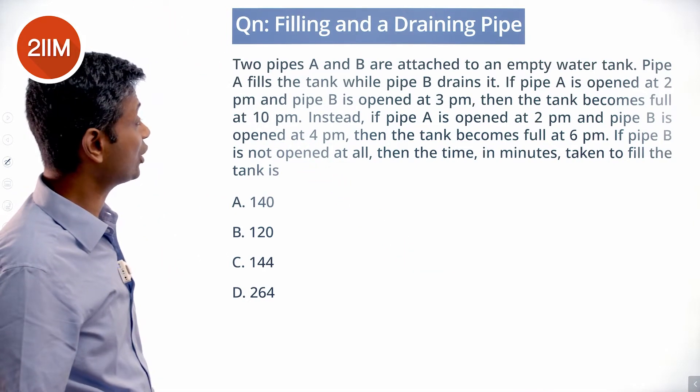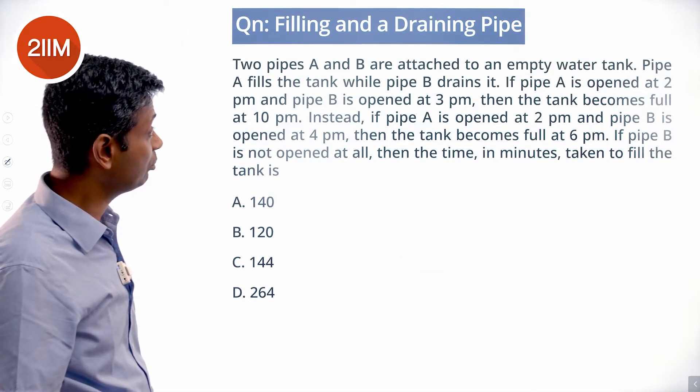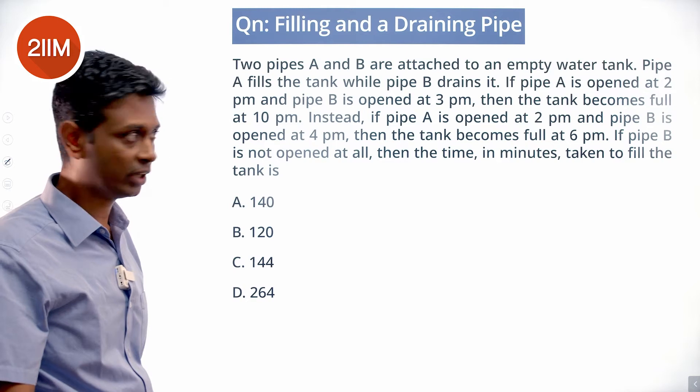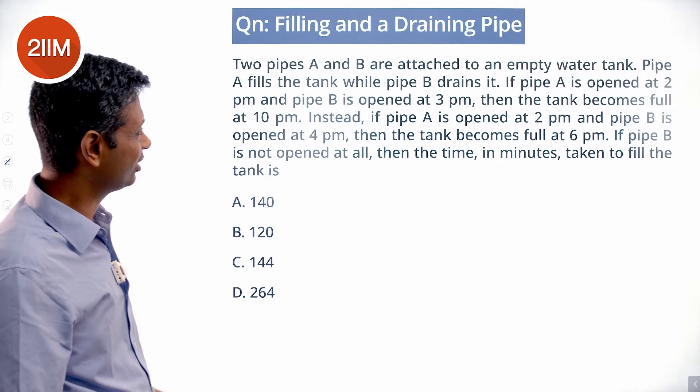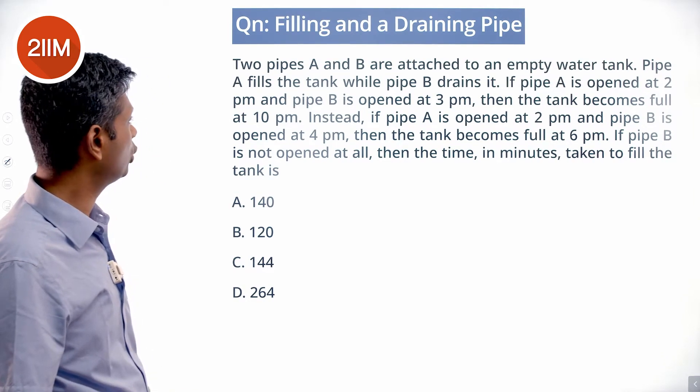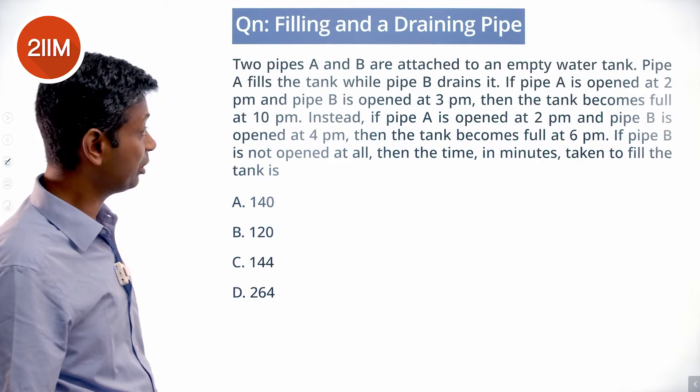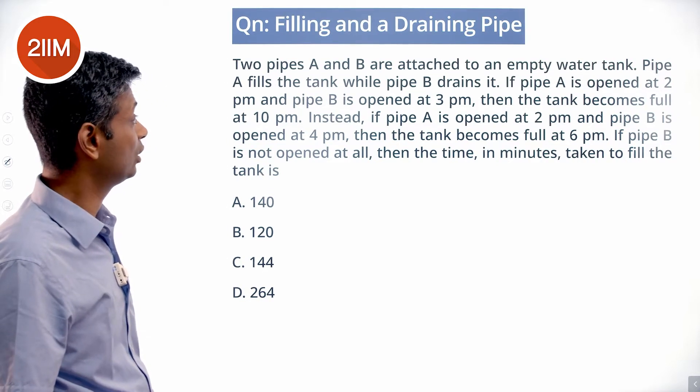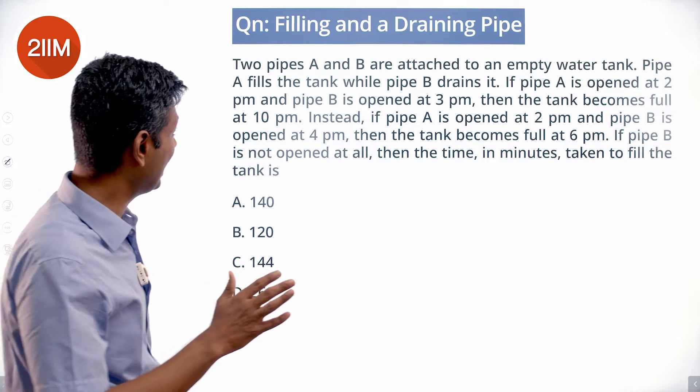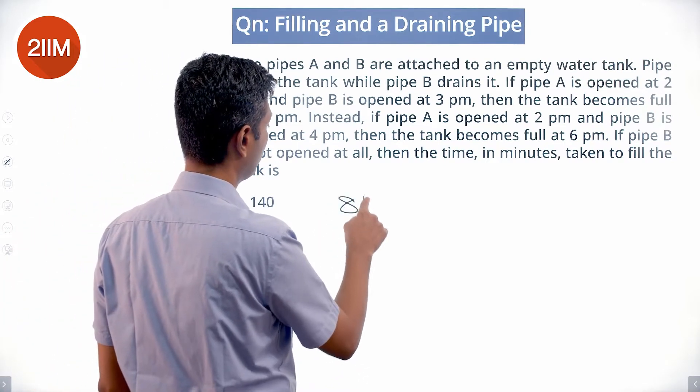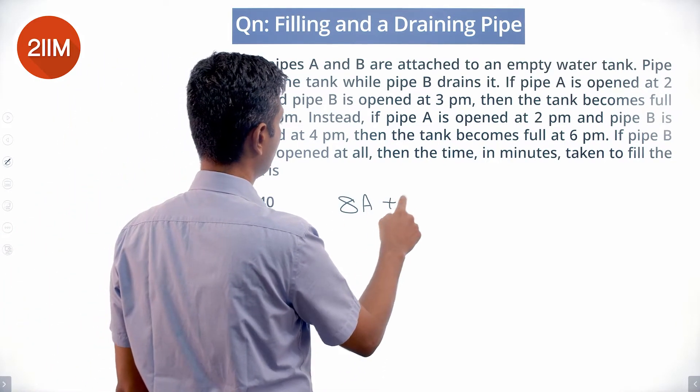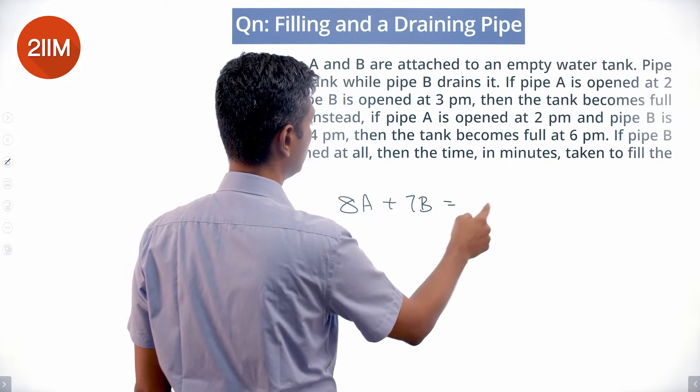Two pipes A and B are attached to an empty water tank. Pipe A fills the tank while pipe B drains it. If pipe A is opened at 2 pm and pipe B is opened at 3 pm, the tank becomes full at 10 pm. So 8 hours of A plus 7 hours of B fills the tank.